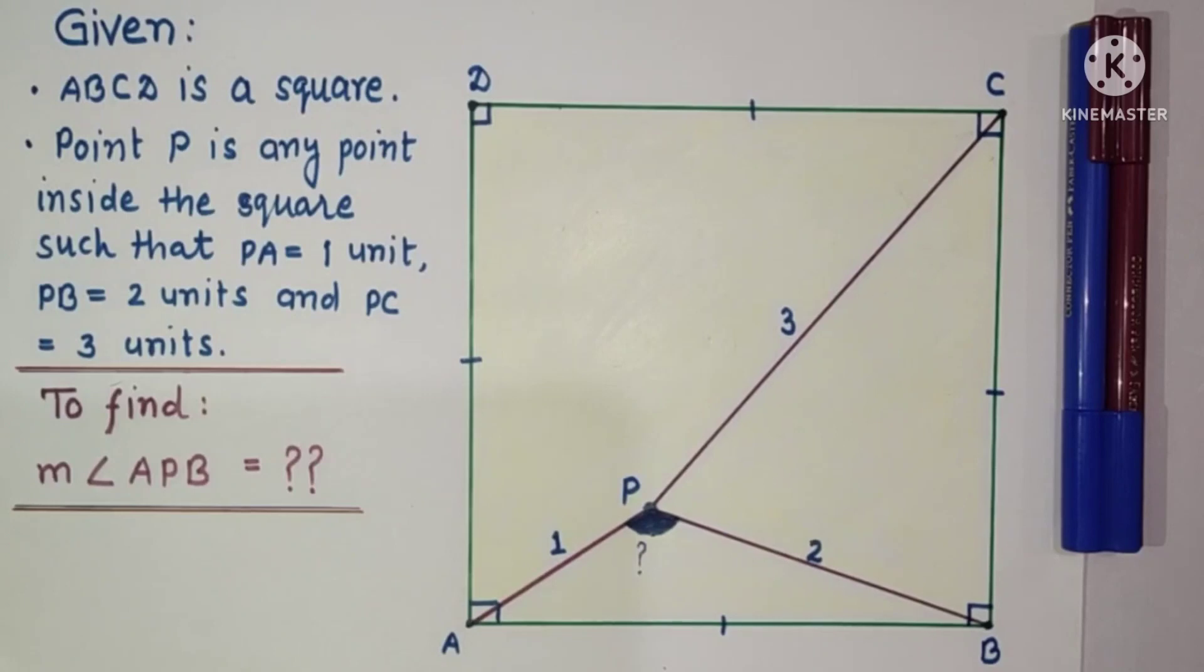Hello friends and viewers, welcome to my YouTube channel. In this question, we are given that ABCD is a square and P is a point inside the square in such a way that the length of AP is 1, length of PB is 2 units, and length of PC is 3 units. We have to find the measure of angle APB.